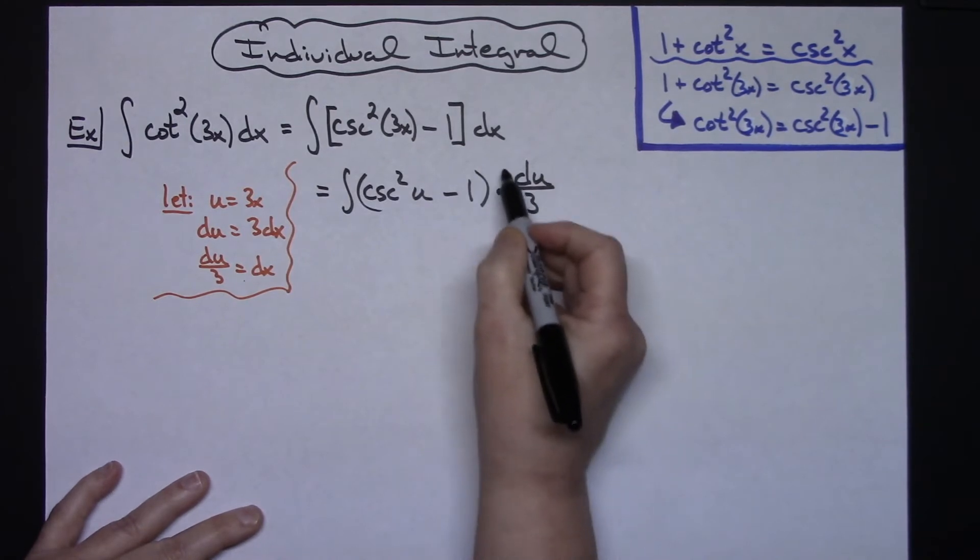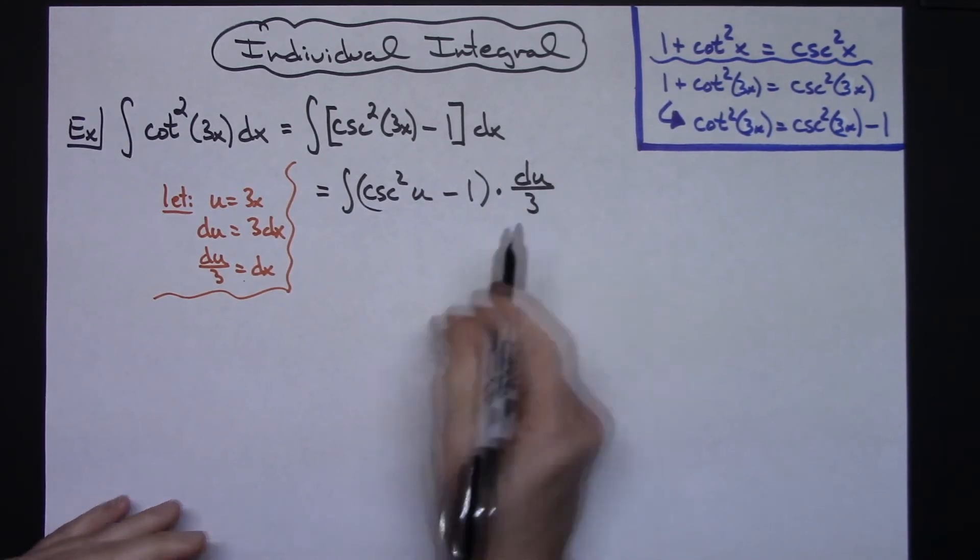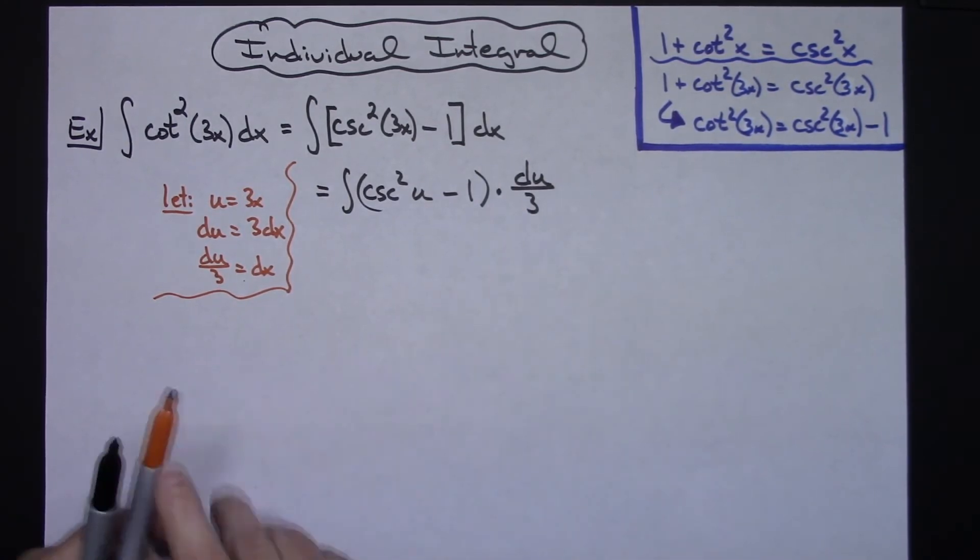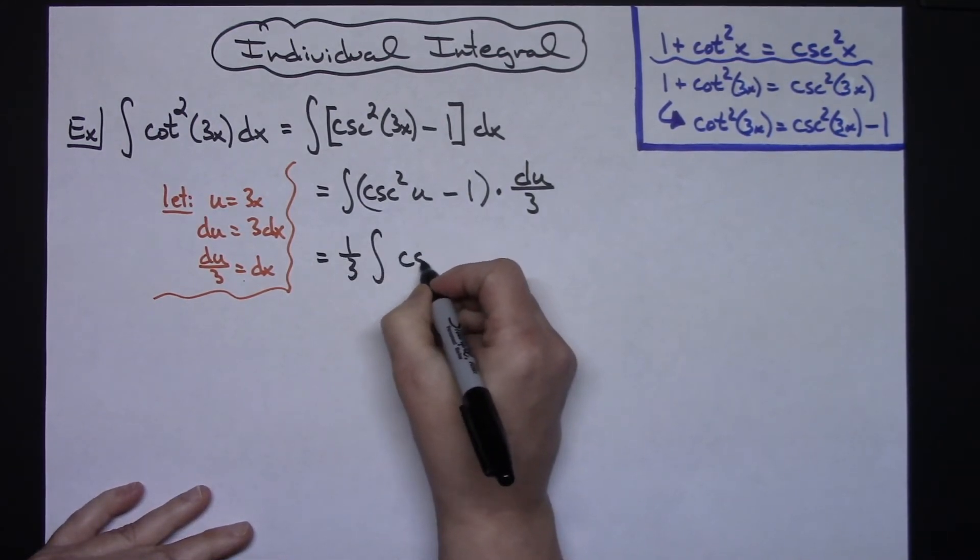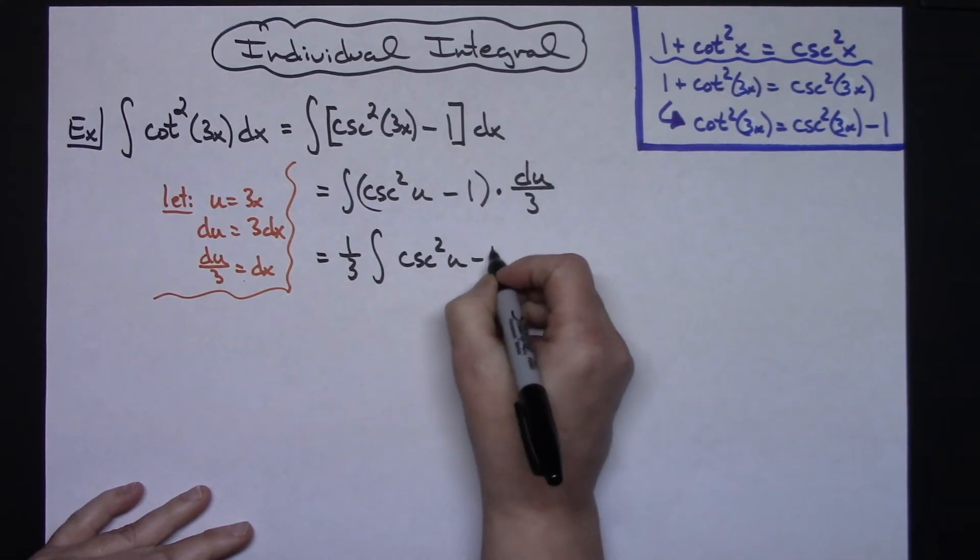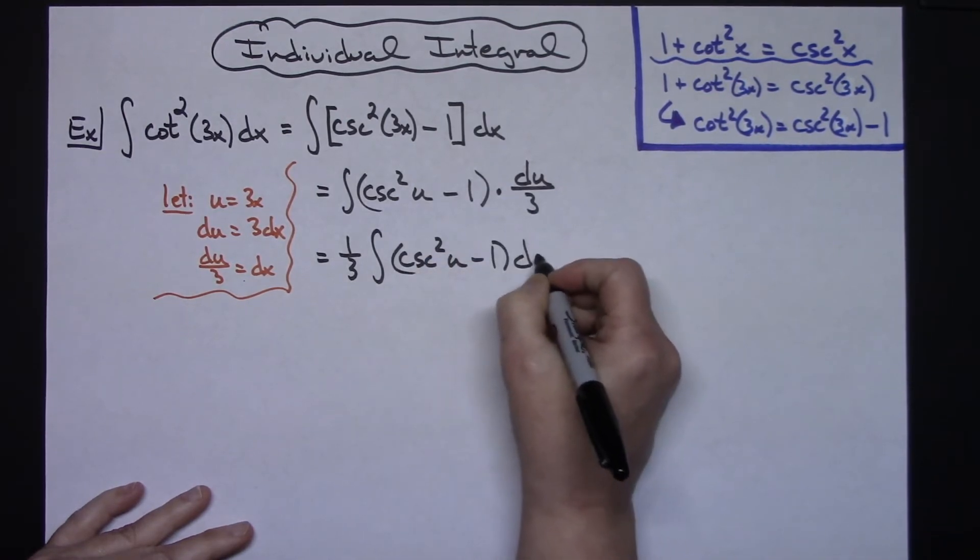Then that's going to allow me to pull out a 1/3. So when I pull out that 1/3, I'll have 1/3 times the integral of cosecant squared u minus 1, and then du.